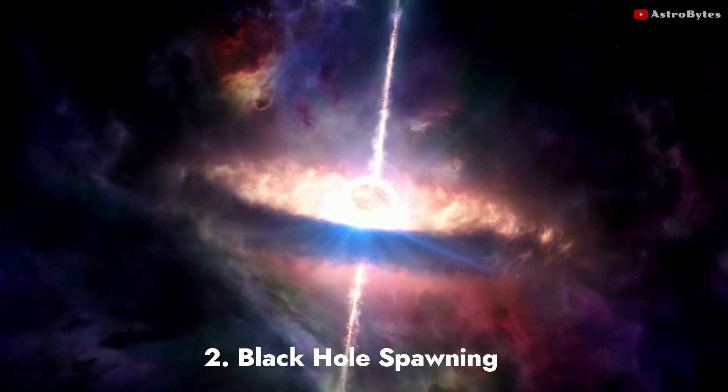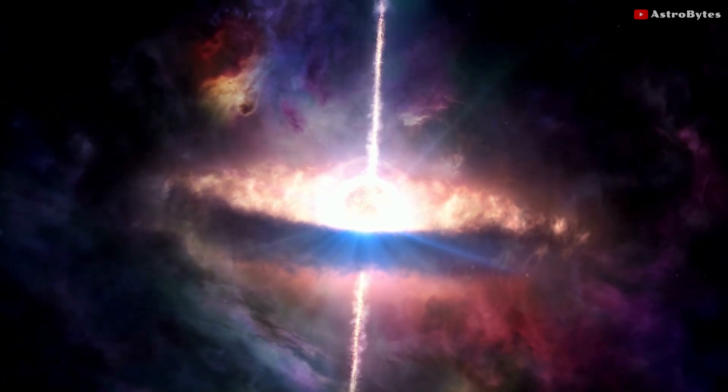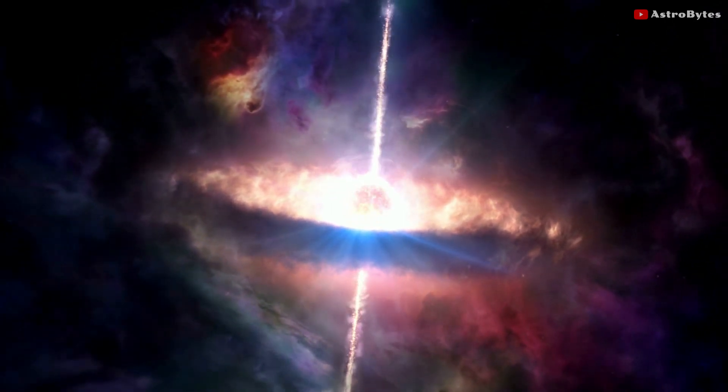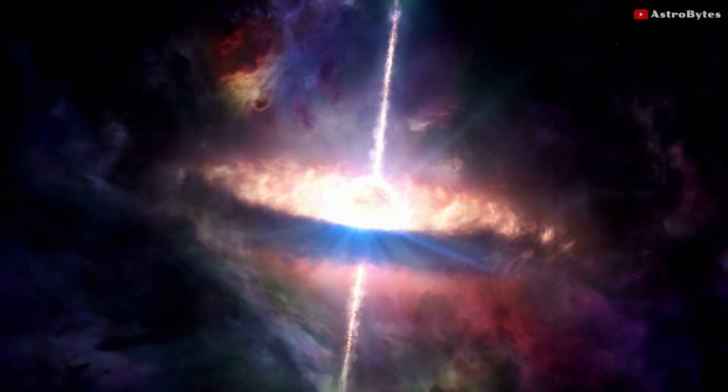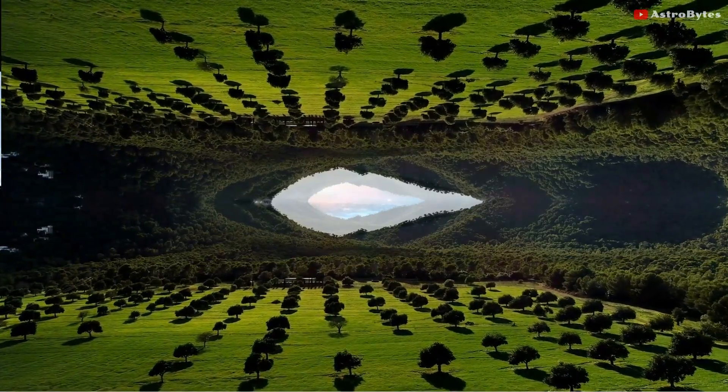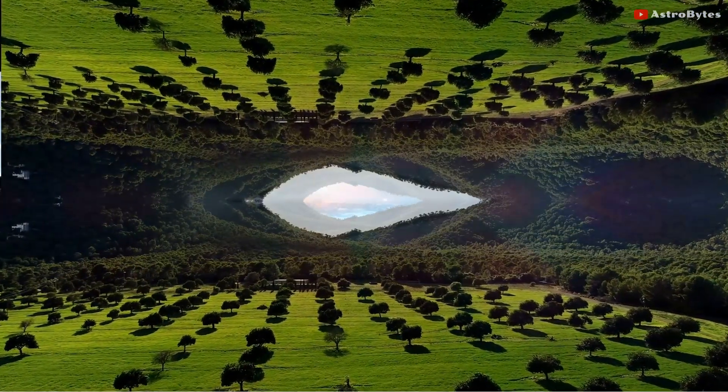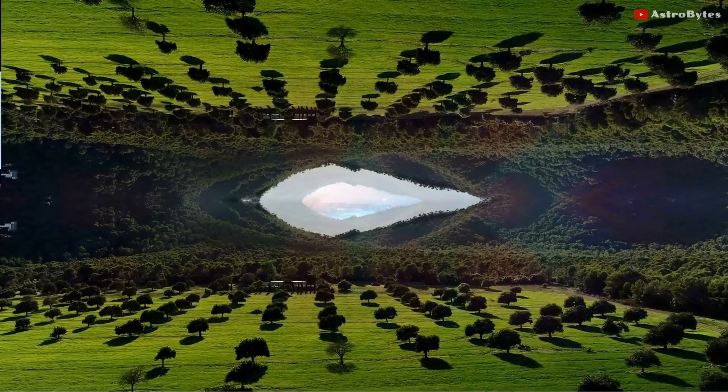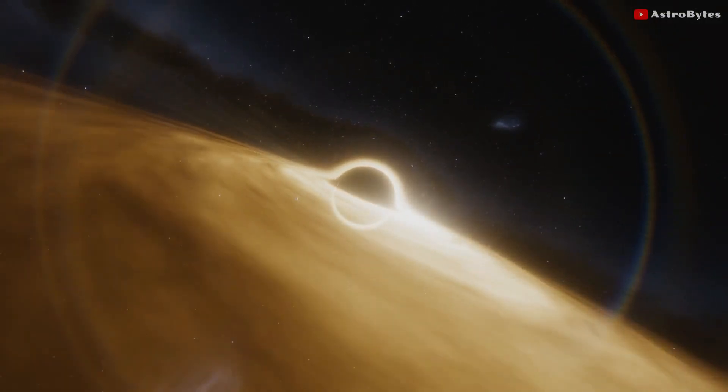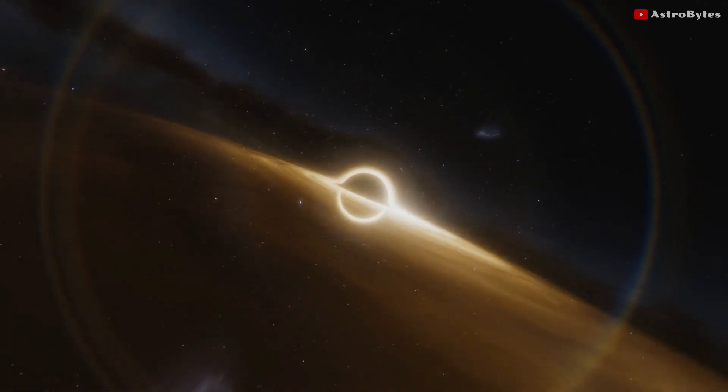Number two: Black Hole Spawning. A theory proposed by physicist Lee Smolin, known as the fecund universes theory, suggests that every black hole in our universe causes the formation of a new universe. Each universe will have slightly different physical laws than the previous universe. In this way, the theory suggests a sort of natural selection for universes. Laws that lead to the frequent formation of black holes lead to the creation of more universes, while universes that do not form black holes become extinct.